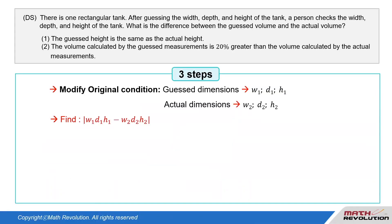Let's take the guessed dimensions to be W1, D1, and H1, and the actual dimensions to be W2, D2, and H2. We have to find the absolute value of W1·D1·H1 minus W2·D2·H2.